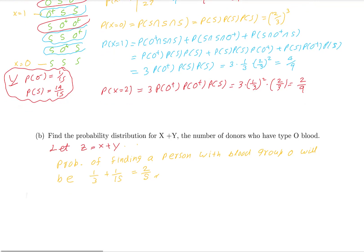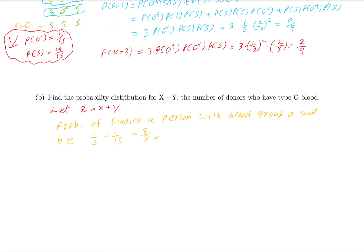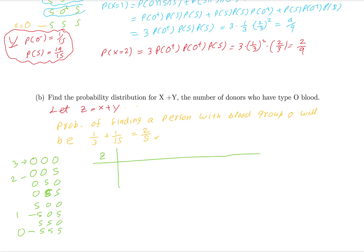For Z, we consider 3 donors where each can be O (group O of either type) or S (something else). The possibilities give Z values of 3 (all O), 2 (two O, one S), 1 (one O, two S), and 0 (all S). So Z can take values 0, 1, 2, and 3.